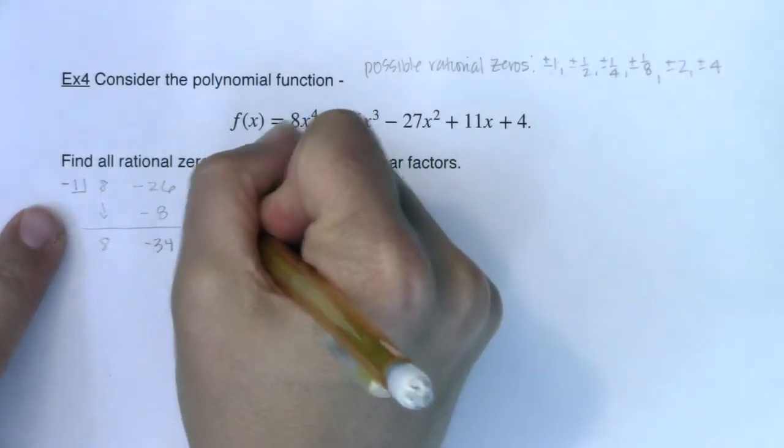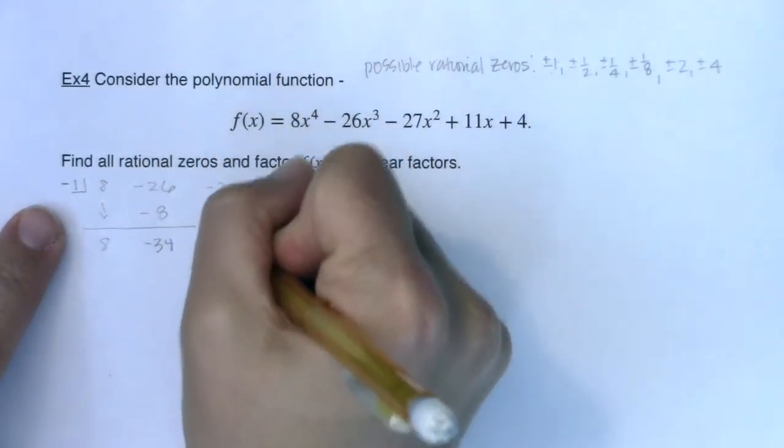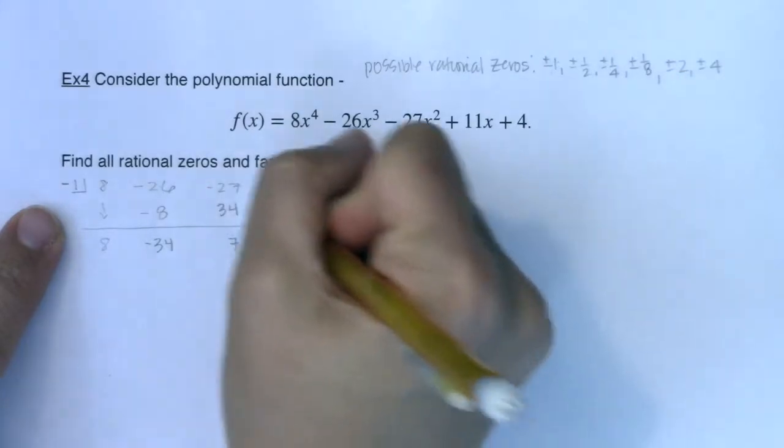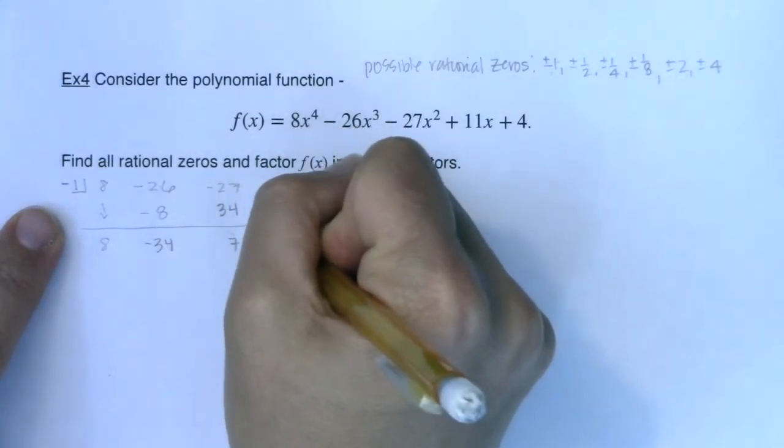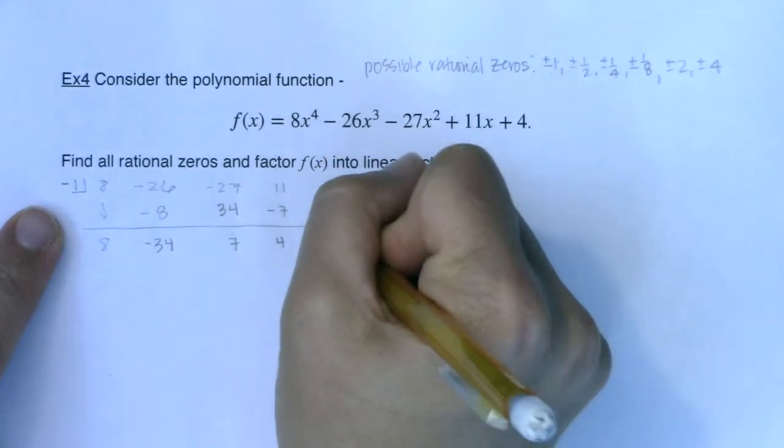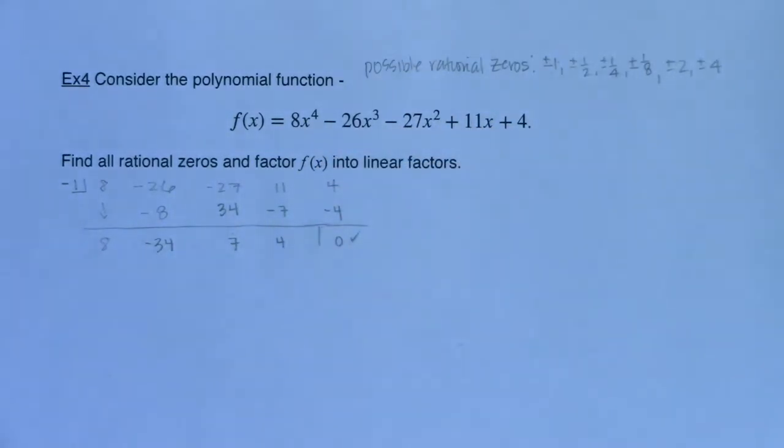And this would be positive 34, so this would be positive seven. This is looking good. Negative seven, four, negative four, zero. Awesome. So I found one rational zero. I still have probably three more to go, but I got one.